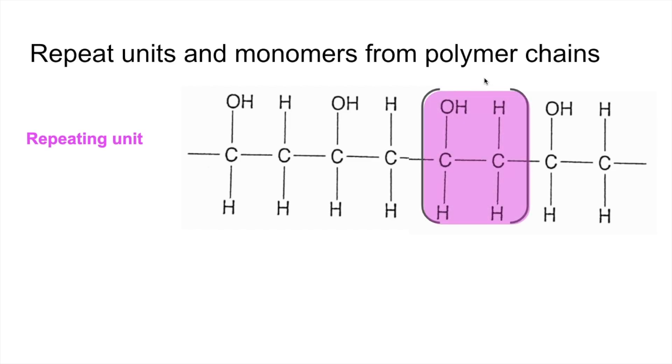To turn that back into the monomer, we literally do the opposite of before. We're going to lose the end bonds and put the double bond back, so we get that. If you're interested, that's called ethenol, not ethanol, because it's got the carbon-carbon double bond there.